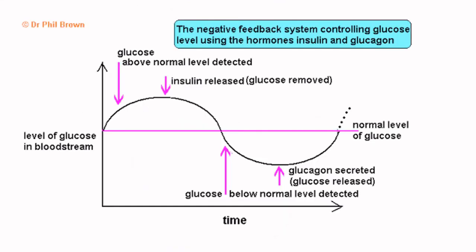This graph nicely shows a principle called negative feedback. This is where a change causes a response to oppose the change. If blood sugar levels are too high, the body does what it can to lower them; when it drops below a set point, the body does the opposite and brings it back up again. Blood sugar levels, if this is functioning properly, should stay fairly close around a set point. Negative feedback is a fundamental concept in homeostasis — it's how our bodies maintain a stable internal state.